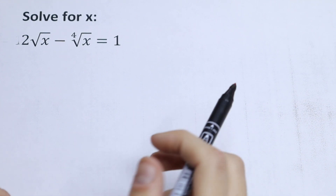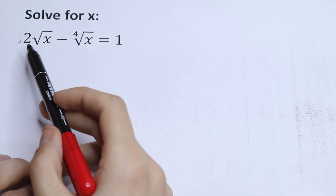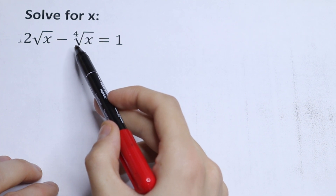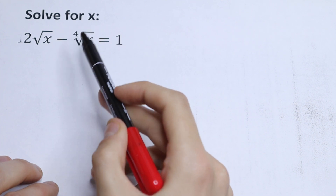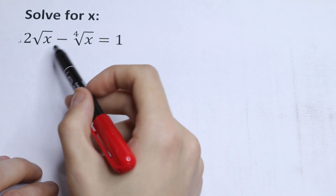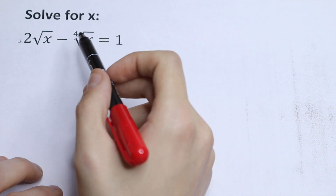Hello everyone! Welcome back to MathMood. Here we have an interesting algebra problem: 2 times the square root of x minus the fourth root of x equals 1. We need to find x in this equation. How can you solve this?